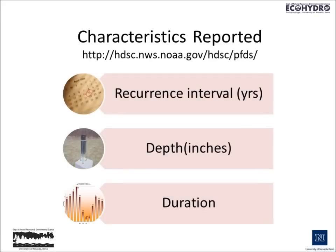The characteristics reported on the website maintained by the National Oceanic and Atmospheric Agency include the recurrence interval — that would be the 100-year, 25-year, 50-year, or 10-year designation — the depth in inches, and the duration of the storm.